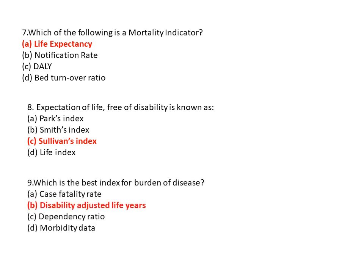Question 9: Which is the best index for burden of disease? Option B is disability adjusted life year (DALY), option C is dependency ratio, and option D is morbidity data. So option B is the correct answer — disability adjusted life year is the best index for the burden of disease.